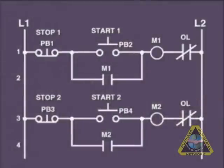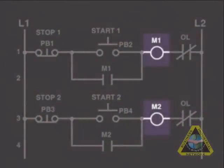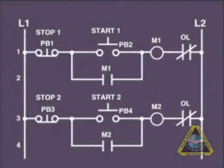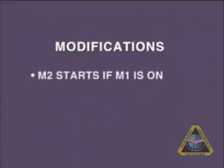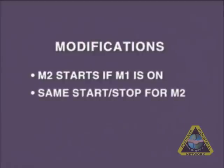In this circuit, we have two independent motor starters being controlled by two separate start-stop circuits. We are told that we need to modify the circuit so that the second motor starter, M2, does not start unless M1 is already on.